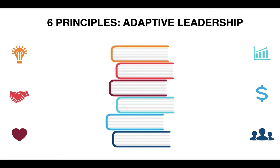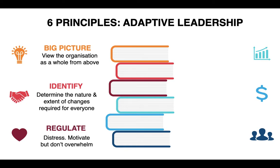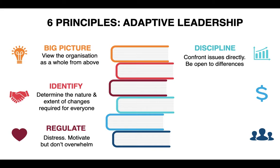There are six principles that make up an adaptive leader. Firstly, being able to look at the big picture — viewing the organization as a whole from above, rather than getting caught up in small details. Secondly, identifying — determining the nature and extent of changes required for everybody. During COVID-19, an adaptive leader needs to know what needs to be changed and how much. Thirdly, regulate — motivate people but don't overwhelm them. We need to reduce people's stress. Fourth, discipline — confronting issues directly, being open to differences, and calling people out when they do something wrong.